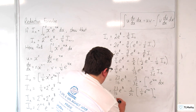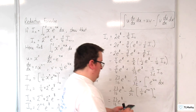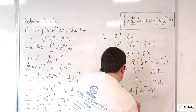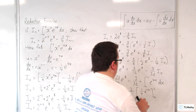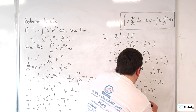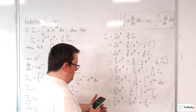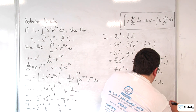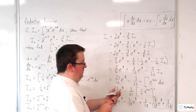So our expression becomes 23 sixteenths e to the 8, take away 3 over 32 times 1 quarter e to the 8 minus 1 quarter. That gives 3 over 128 times e to the 8. The minus 1 quarter times minus 3 over 32 gives plus 3 over 128. So the final answer is 23 over 16 minus 3 over 128 times e to the 8, plus 3 over 128, which simplifies to 181 over 128 times e to the 8 plus 3 over 128.